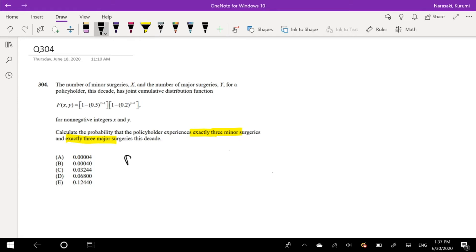So that's basically just asking the probability that x equals 3 and y equals 3. Notice they give you the cumulative distribution function. The cumulative distribution function is the antiderivative of the probability distribution function.